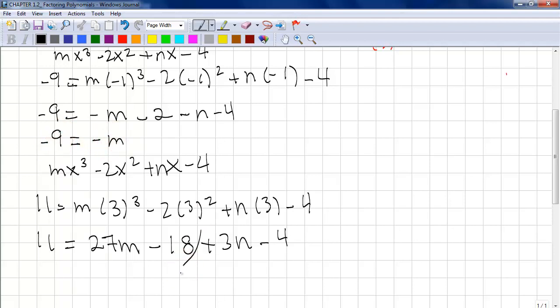We can subtract -2 by -4, which would be -m - 6. And same with here, can be 11, 27m, plus 3n, -18 minus -4 is -22. So that's as far as our both of our equations go.